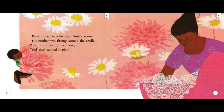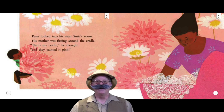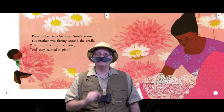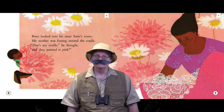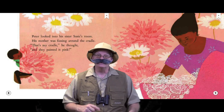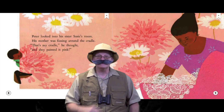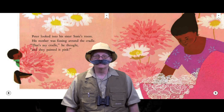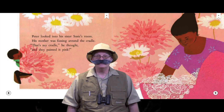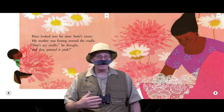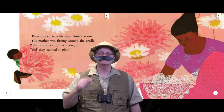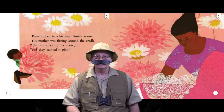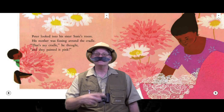And they painted it pink. Now that we've read a little bit of the story, I want to talk to you about characters. Can you name the characters on this page? Yeah, that's right. Wow, you guys are really smart. The characters on this page are Peter and his mother.